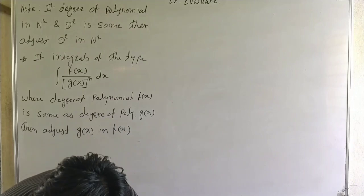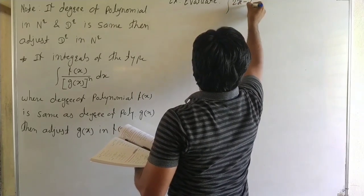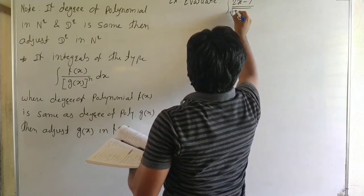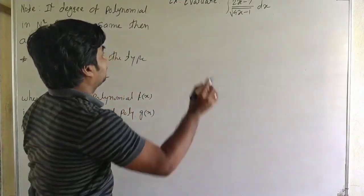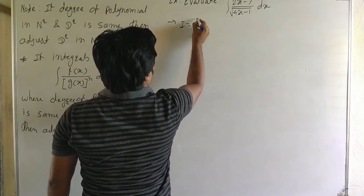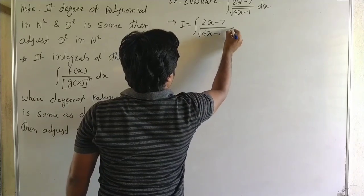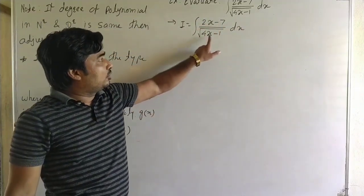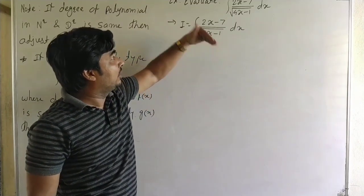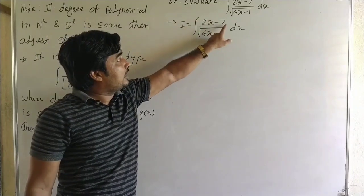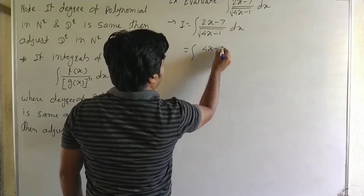Next example: evaluate the integral of (2x minus 7) upon √(4x minus 1) dx. This is again of the form f(x) upon √(g(x)) where the degree of polynomial f(x) and degree of polynomial g(x) are the same. So we adjust (4x minus 1) in the numerator — that is, express (2x minus 7) in terms of (4x minus 1).